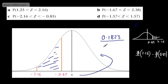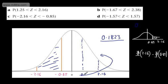So that one is nice and straightforward — just look at it in terms of symmetry. If you wanted to use symmetry, you could drop down a line and put the points 2.16 and 0.85 on the positive side, and find the area between them.